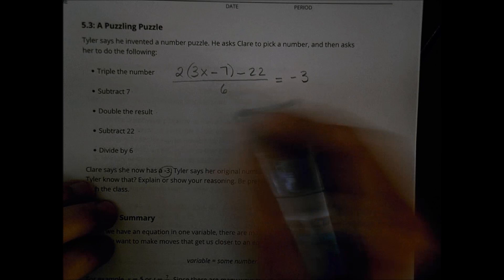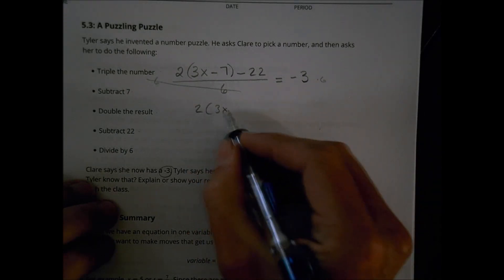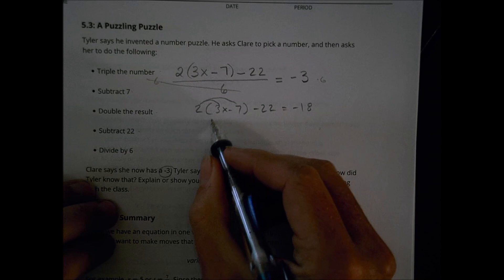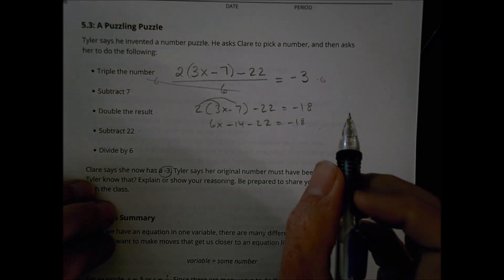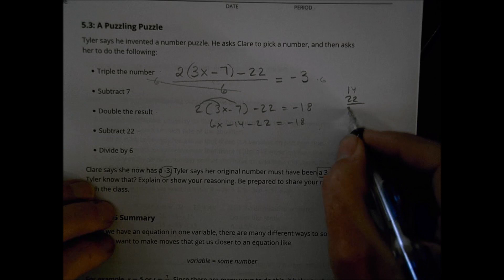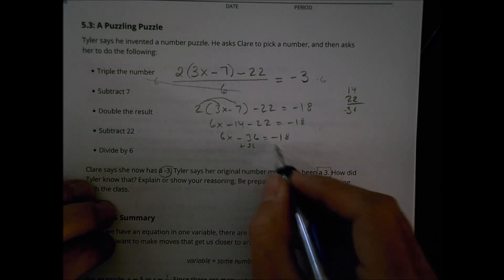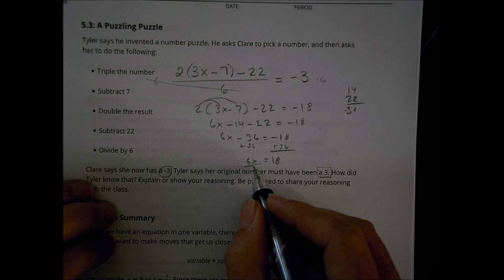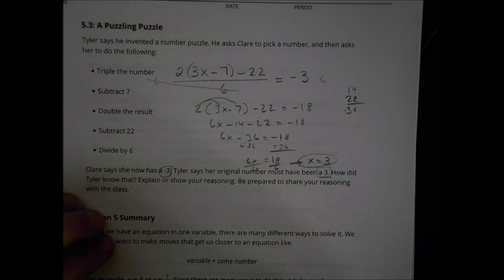Multiplying both sides by 6 eliminates the denominator, giving 2(3x minus 7) minus 22 equals negative 18. Distributing the 2 gives 6x minus 14 minus 22 equals negative 18. Combining the constants: 6x minus 36 equals negative 18. Adding 36 to both sides: 36 minus 18 gives positive 18, so 6x equals 18. Dividing both sides by 6, x equals 3, confirming Tyler's answer.